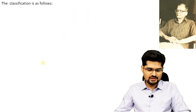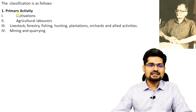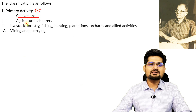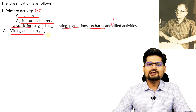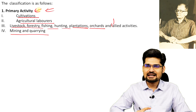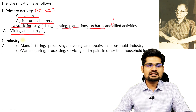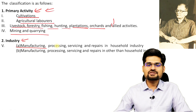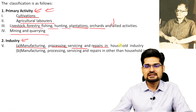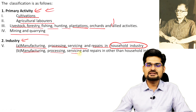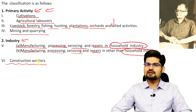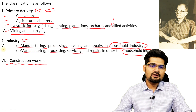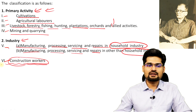Let's look into Ashok Mitra's classification. The first category is primary activity, covering cultivators, agricultural laborers, livestock, forestry, fishing, hunting, plantations, orchards, and mining and quarry. The second category is industry, which includes manufacturing, processing, servicing and repairs in household; manufacturing, processing, servicing and repairs other than household; and construction workers — making up categories three through six under industry.